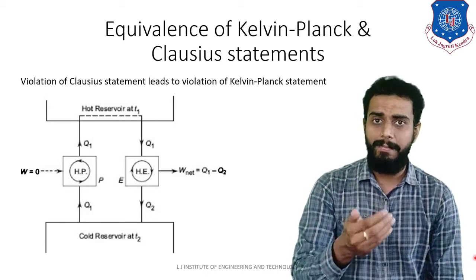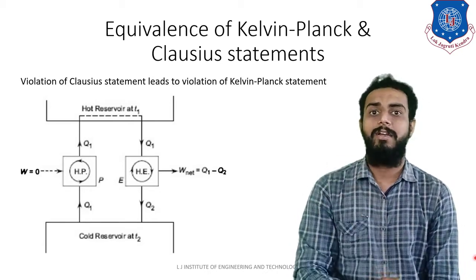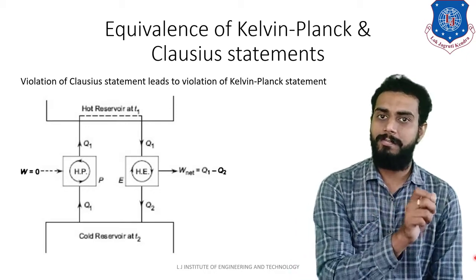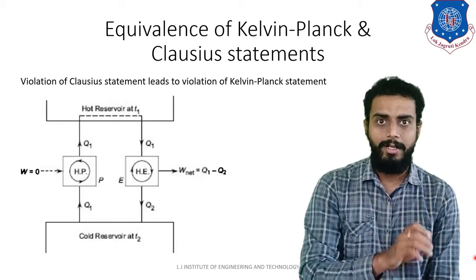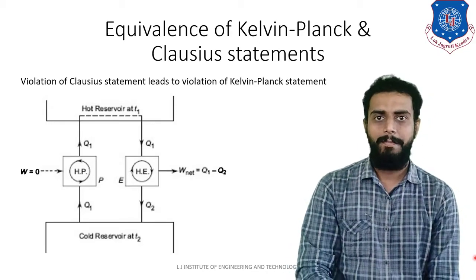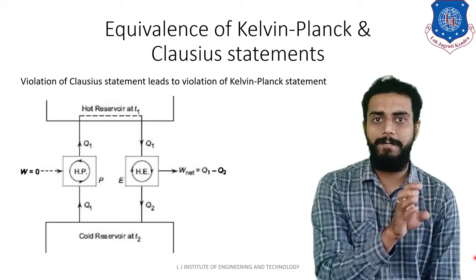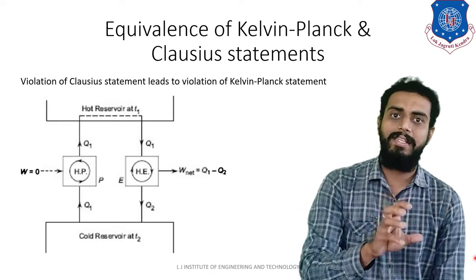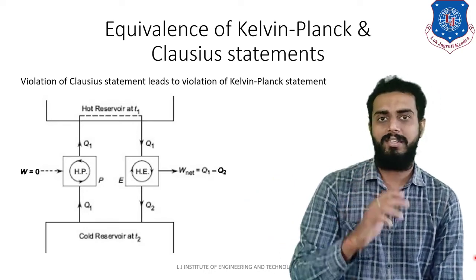Many times in examinations, only one particular case is asked. For example, explain that violation of the Clausius Statement will lead to the violation of the Kelvin-Planck Statement — at that time you only explain that particular case. But if asked to explain the equivalence of the Kelvin-Planck and Clausius Statements, then you have to explain or write both cases together.